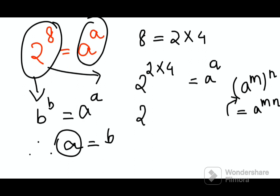So I can write this as nothing but 2 raised to 2 the whole raised to 4 is equals to A raised to A.